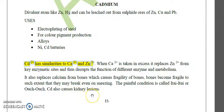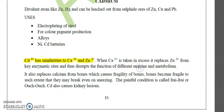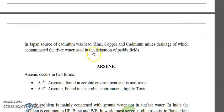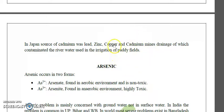In Japan, the source of cadmium was drainage from lead, zinc, copper, and cadmium mines. This acid mine drainage contaminated river water used for irrigation of paddy fields, which is how cadmium toxicity spread there.